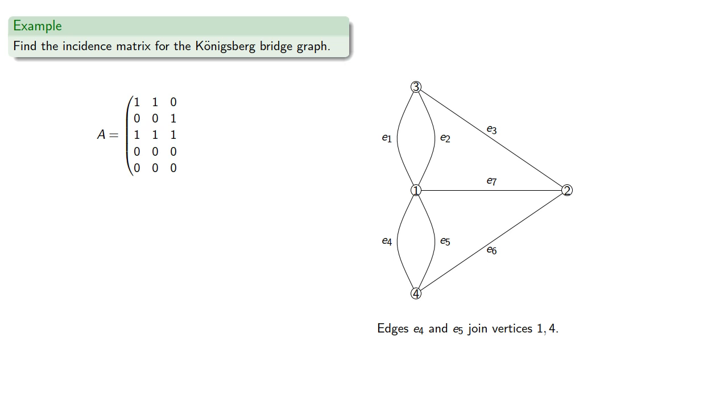Edges E4 and E5 join vertices 1 and 4. Edge E6 joins vertices 2 and 4. Edge E7 joins vertices 1 and 2.